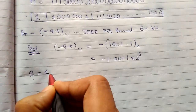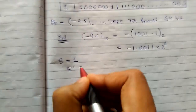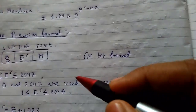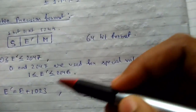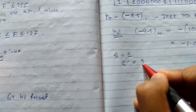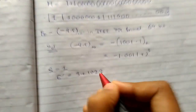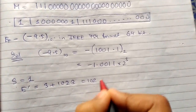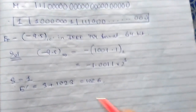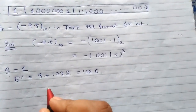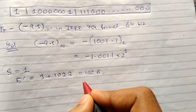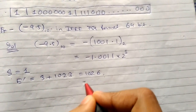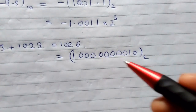Since it is a minus sign, the sign bit is 1. For the biased exponent, the bias for double precision is 1023, so E-bar = 3 + 1023 = 1026. Now convert 1026 into binary.